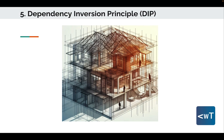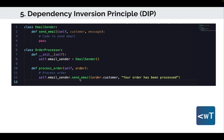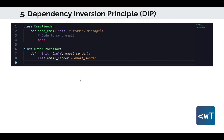Let's examine a code that violates this principle. In this example, the OrderProcessor class directly depends on the concrete implementation EmailSender, violating the DIP. In the refactored code shown on the screen, we've applied the Dependency Inversion Principle to ensure that high-level modules such as OrderProcessor do not directly depend on low-level modules like EmailSender. Instead, both modules now depend on a common abstraction, promoting a more adaptable and manageable code base.